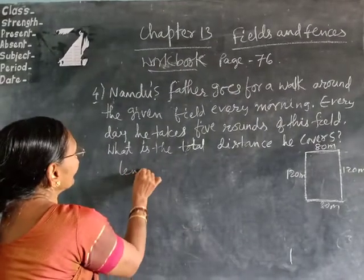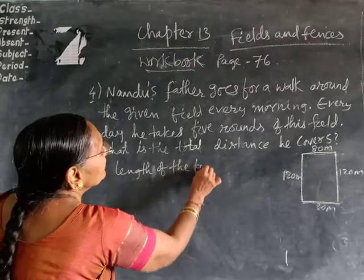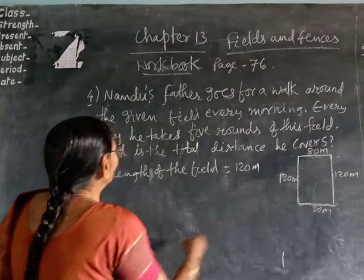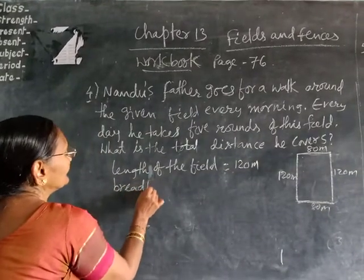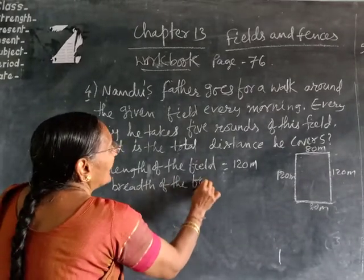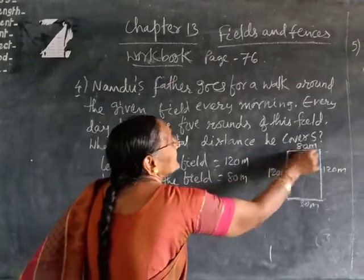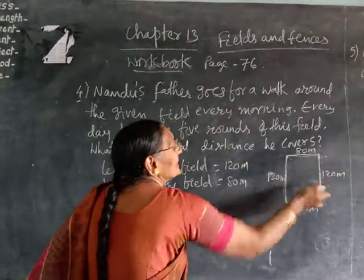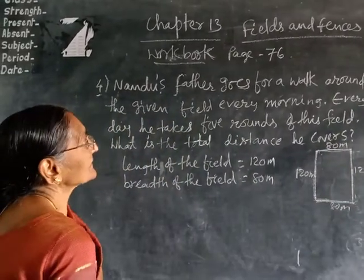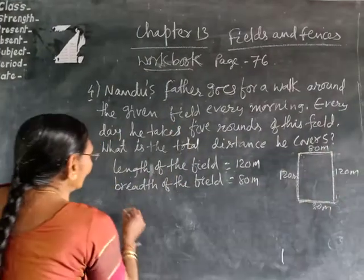Length of the field is equal to 120 meters. Then breadth of the field — how much is that? That is 80 meters. This is length and this is breadth. These two lengths are equal and these two breadths are equal, so it is a rectangular shape. Around the figure like that — that is the perimeter we have to find.